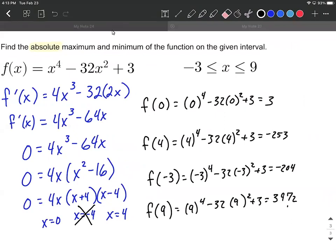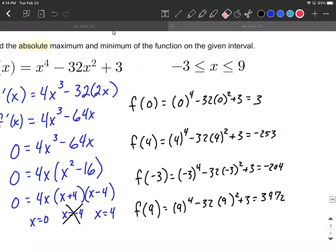All right, so what we're going to do to finish this up and actually identify the absolute maximum, absolute minimum, is just compare these numbers. The very biggest number, that 3,972, that's the absolute maximum, which is the biggest number.